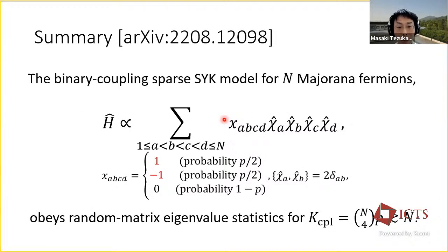My take-home message is the following. We propose the binary coupling sparse SYK model, in which 4 out of n Majorana fermions interact with a coefficient plus or minus 1 at some probability p. We numerically observe that this model obeys random matrix eigenvalue statistics when the number of non-zero couplings is at least about as many as the number of the Majorana fermions, which corresponds to p on the order of n to the minus third.